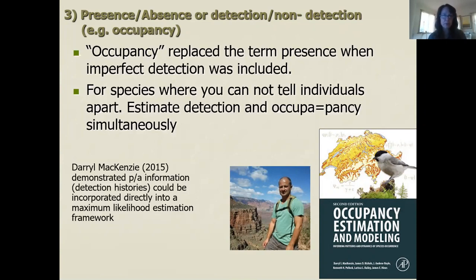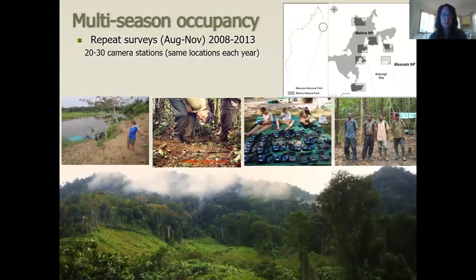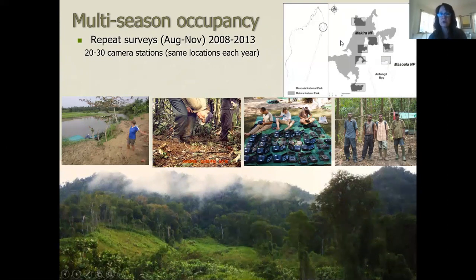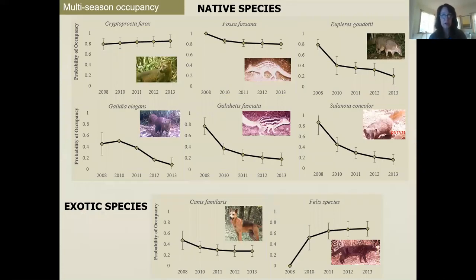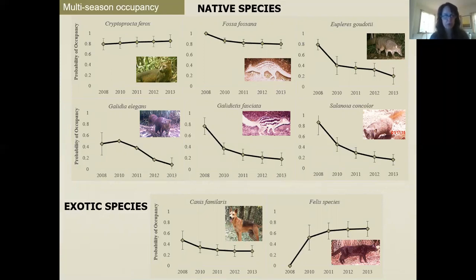An example from Madagascar involves long-term surveys across multiple sites over five years, with publications from 2015. We estimated occupancy across different years to see how animals fared across the landscape. The y-axis shows probability of occupancy from zero to one hundred percent. The fossa sits at about eighty percent occupancy, meaning it's being photographed across eighty percent of that study site — really widespread.